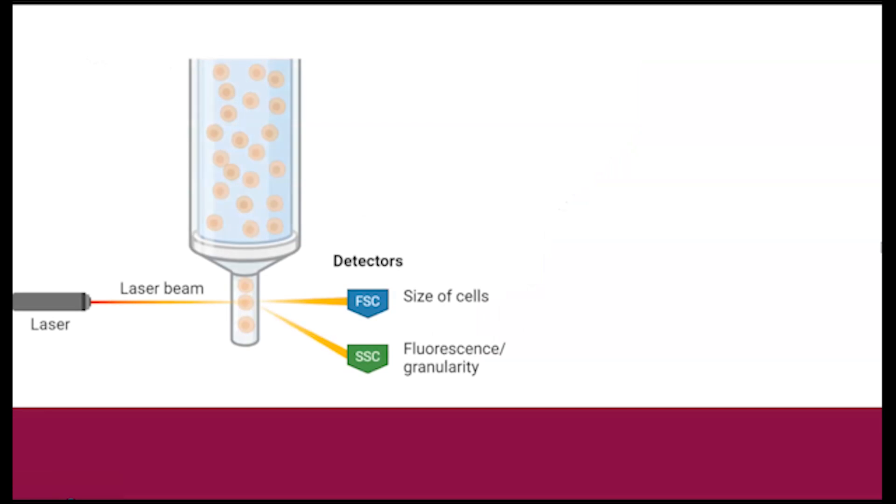Within the second component, or the optical system, the focusing of the sample of cells in a single file streamline leads into the second part of the technique, in which a laser will strike each cell at the interrogation point. As the light strikes, light scattering occurs in two main ways: forward scatter and side scatter. In forward scatter, the larger the size of the cell, the greater the forward scatter, meaning the angle is greater as the light reaches the detector.